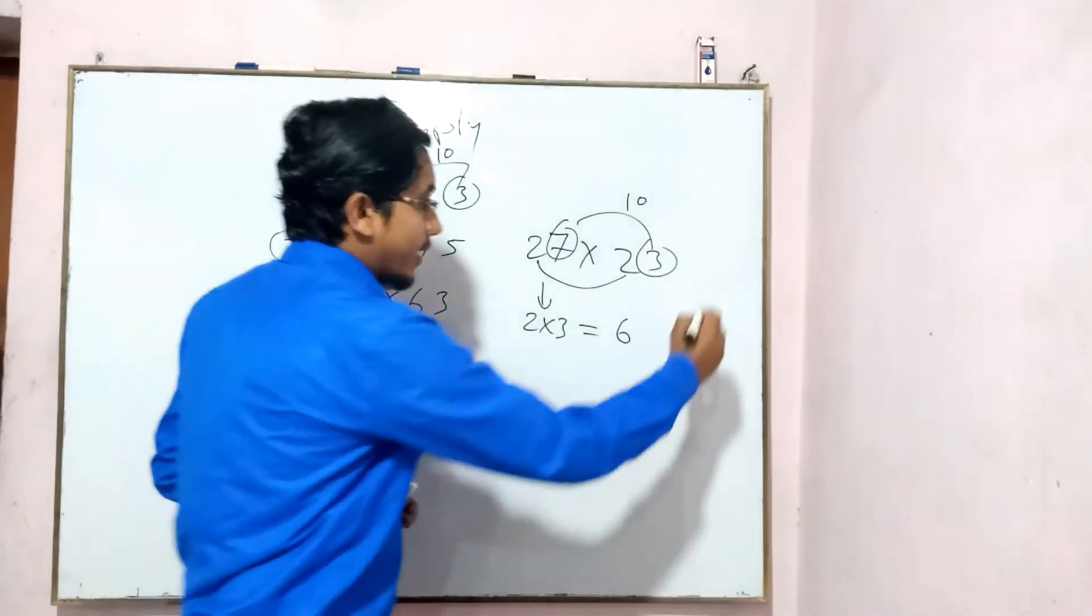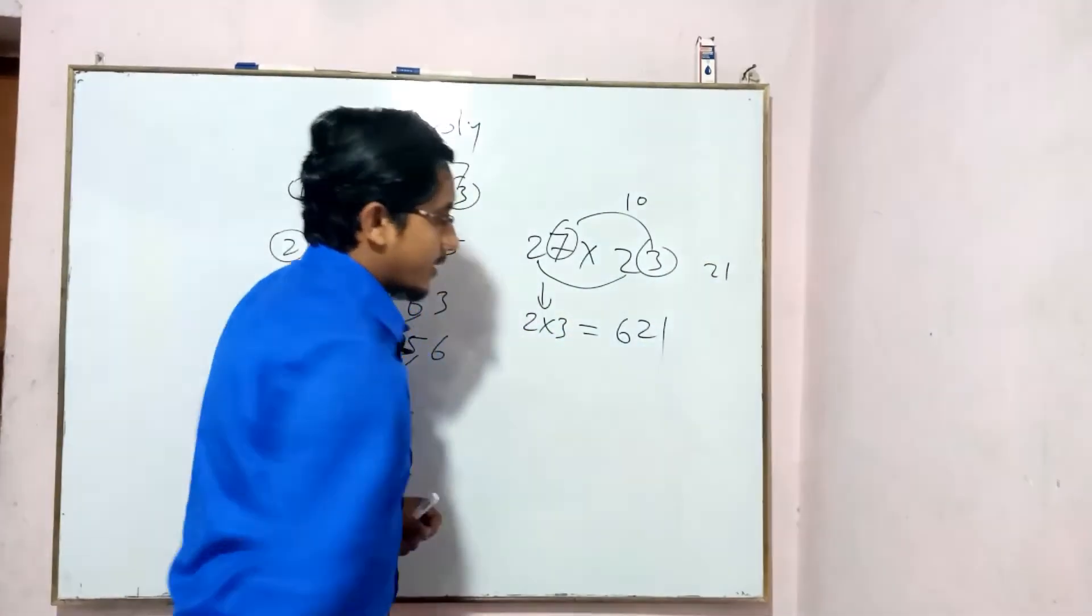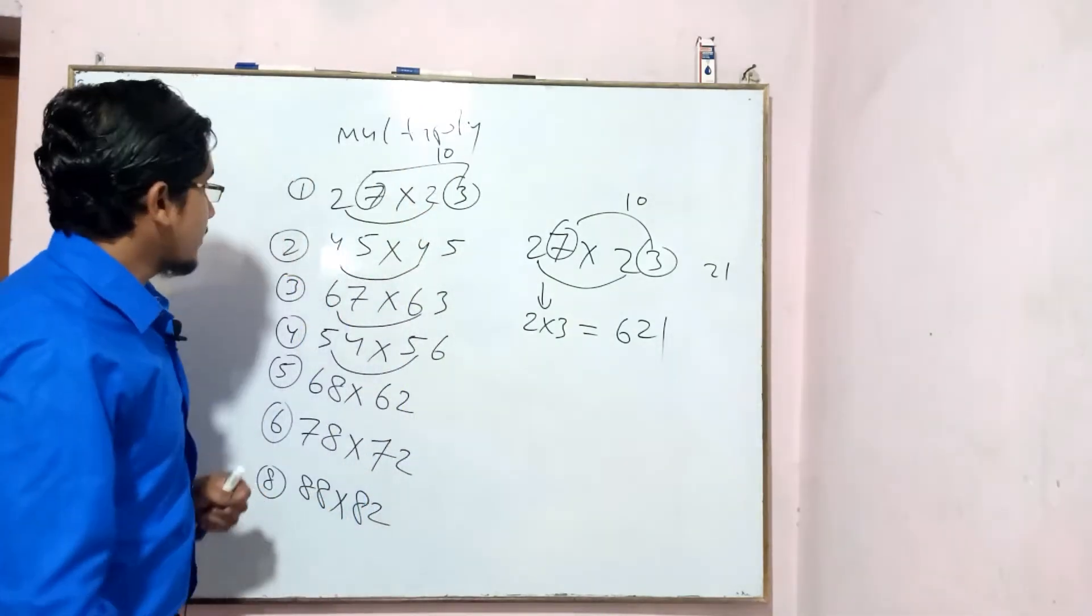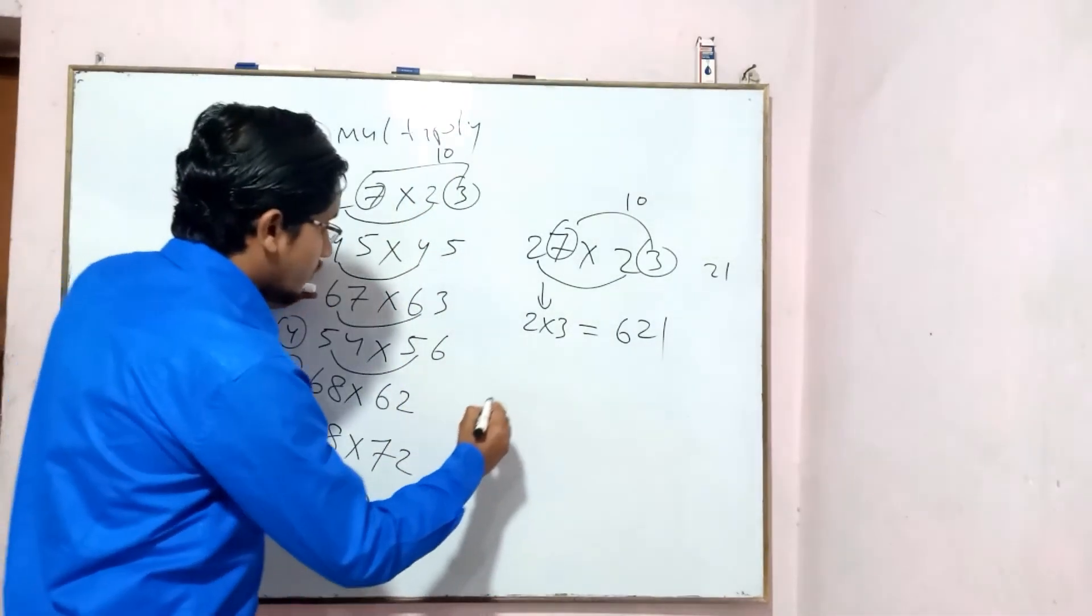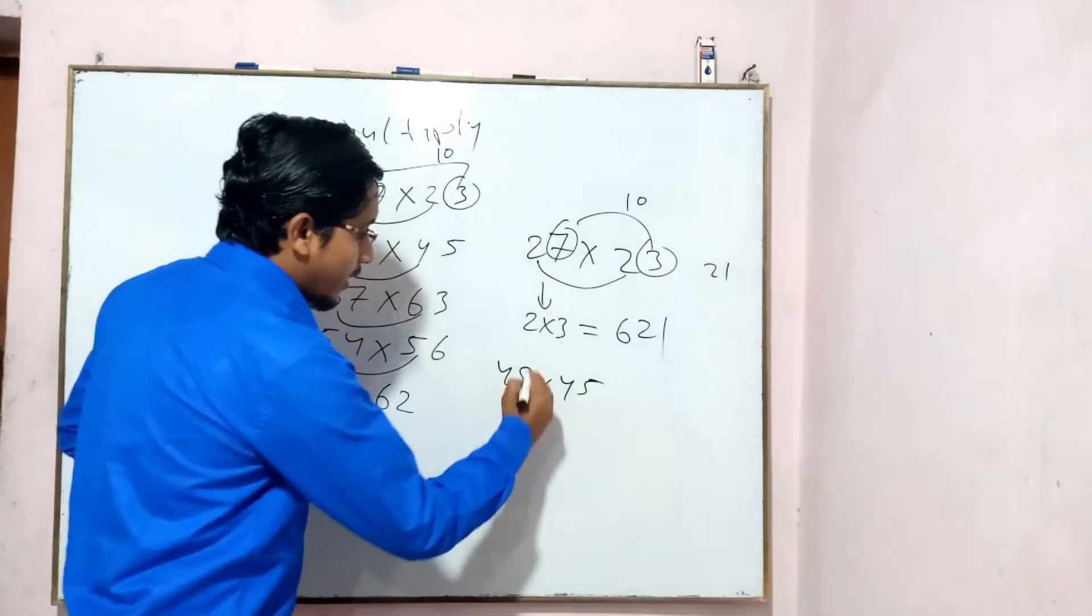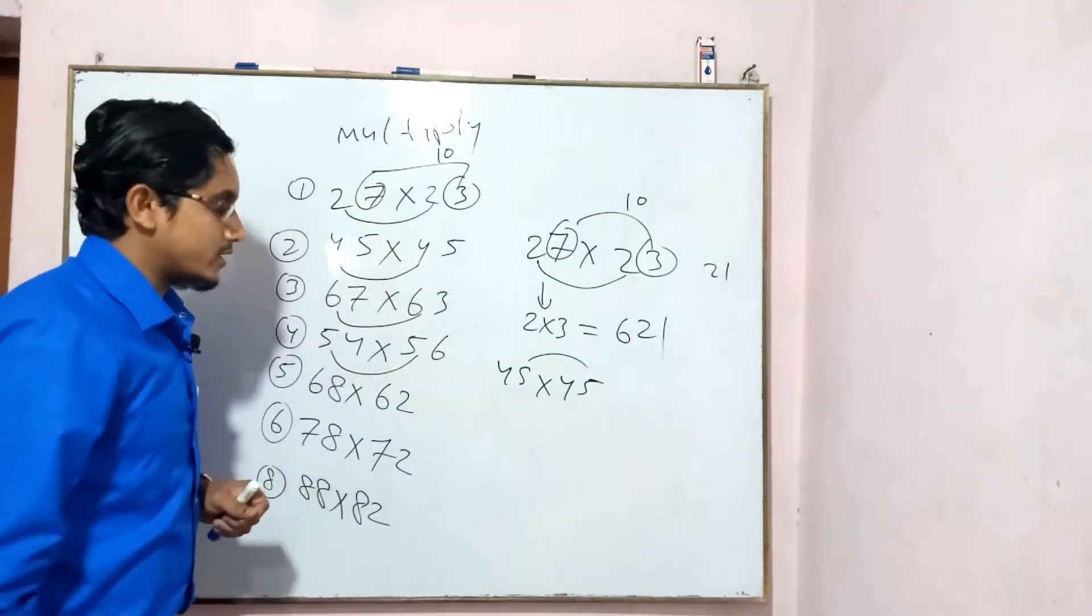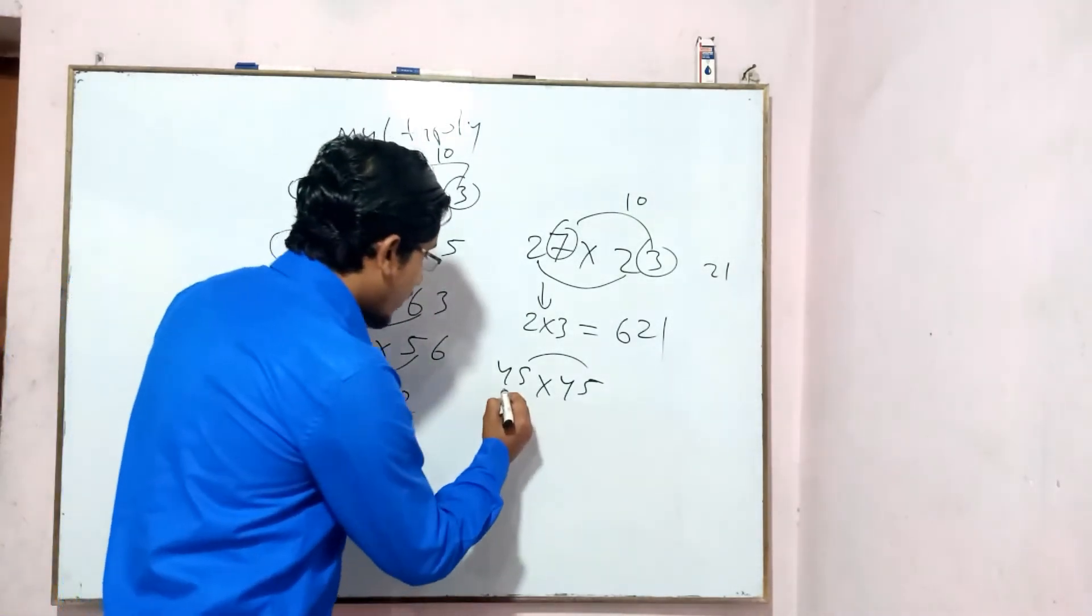The seven are constant. So, this here is 45 into 45. 45 into 45. This is the sum of three.